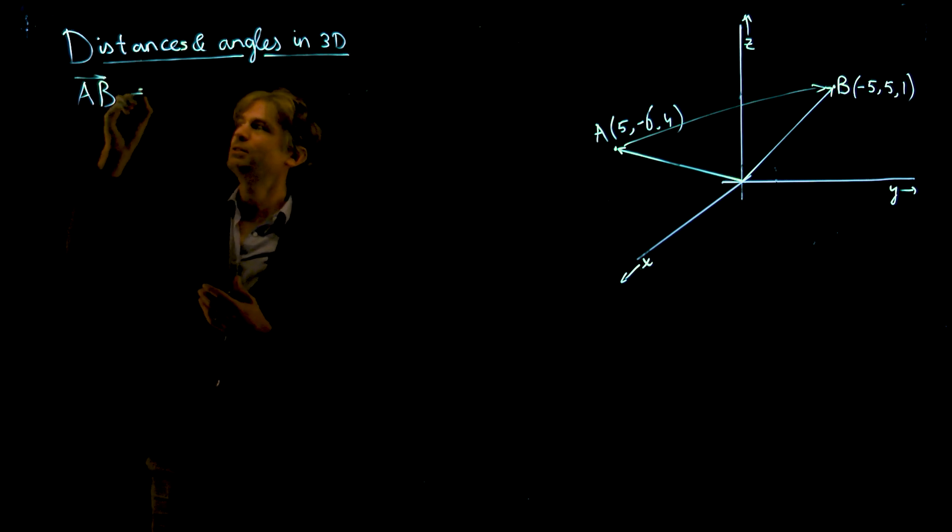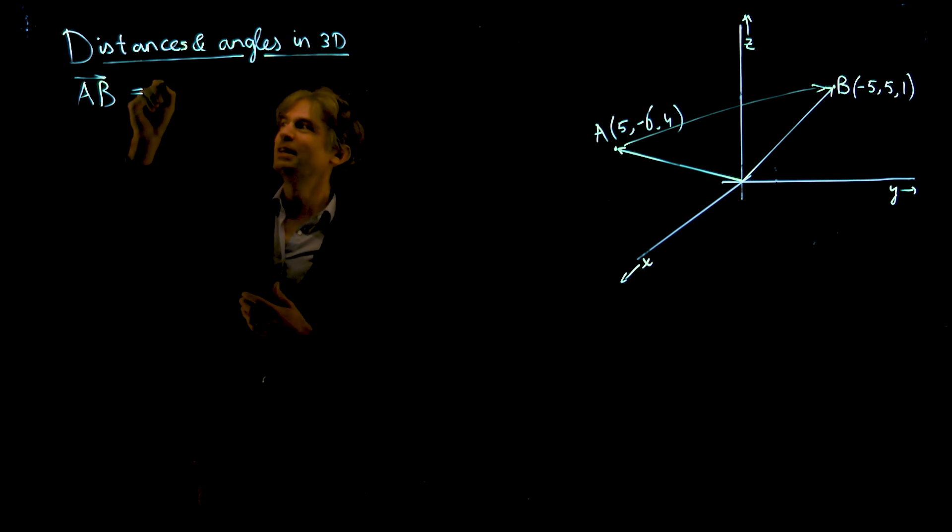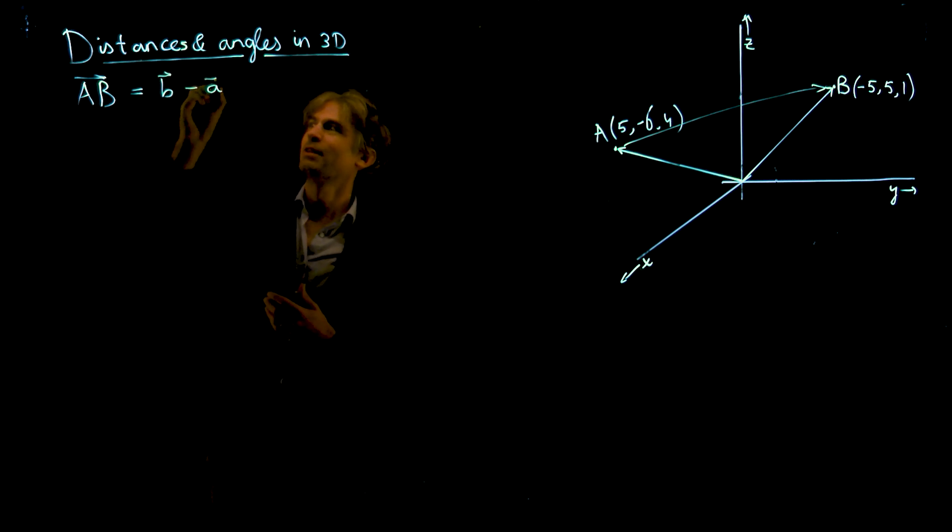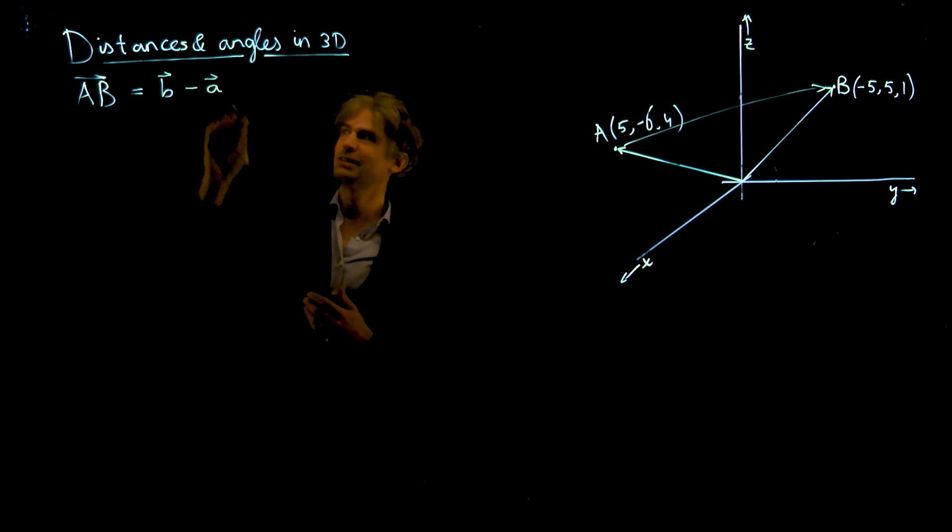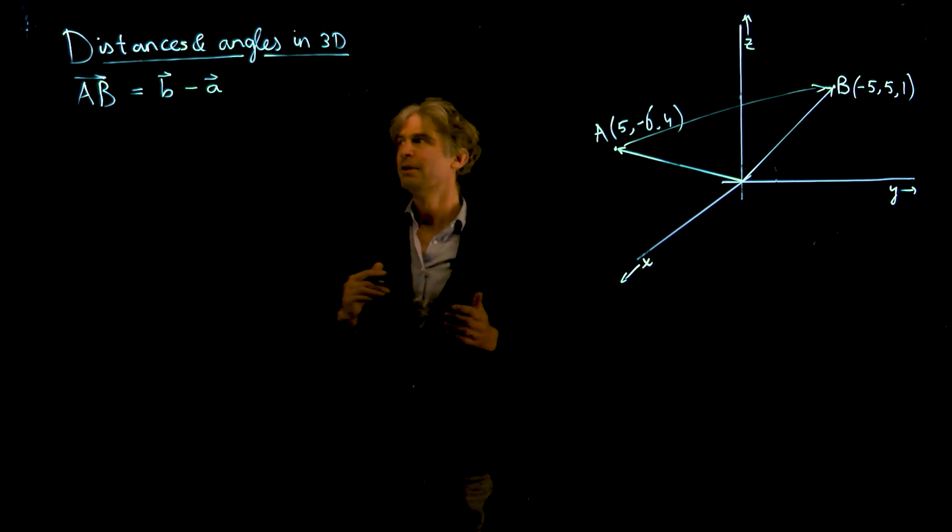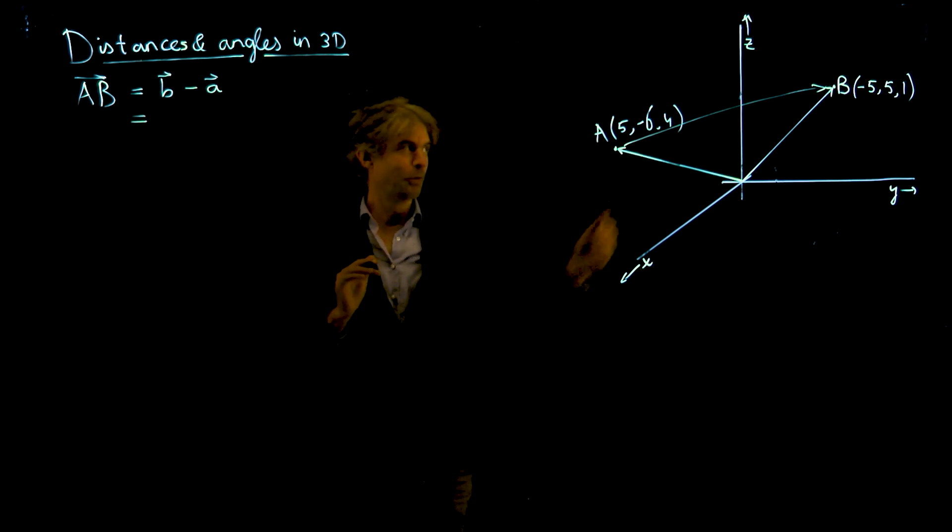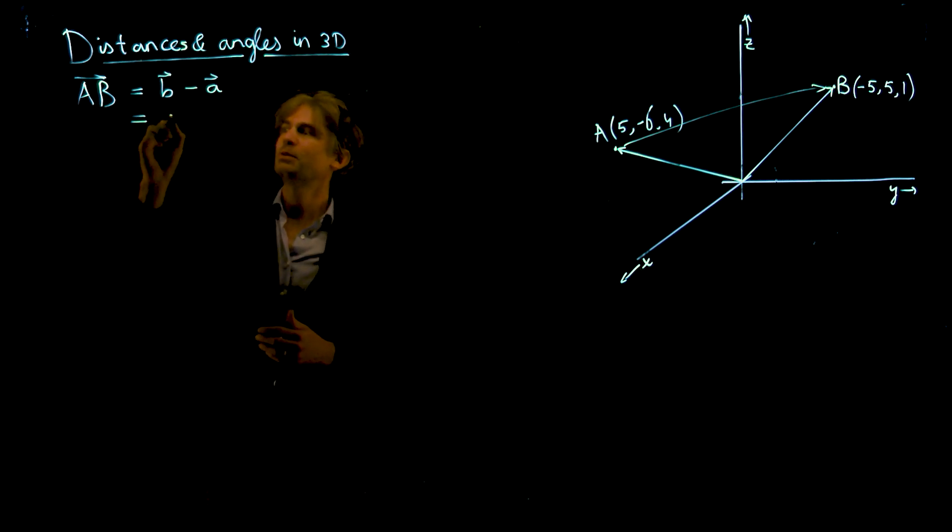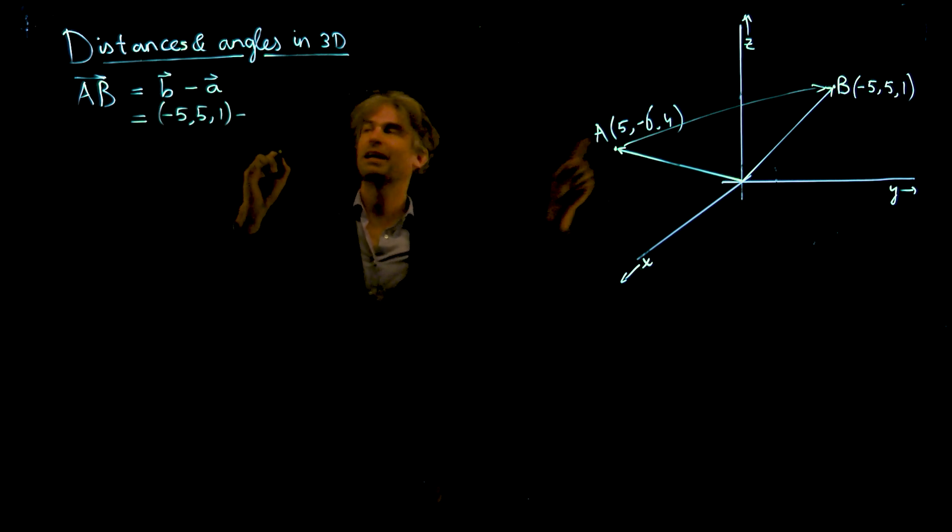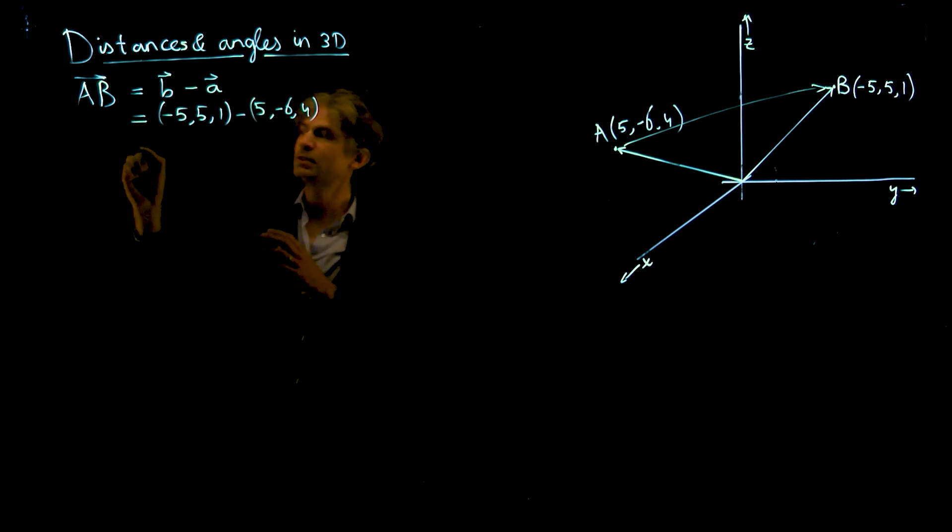How to do this: take the difference between the vector B and the vector A. The capitals refer to the points and the small letters B and A refer to the vectors towards A or B. This is always true. Now let's plug in what we have. We compute for these coordinates minus the coordinates there: 5, minus 6, and 4. When you compute such a difference, you do it for each coordinate.